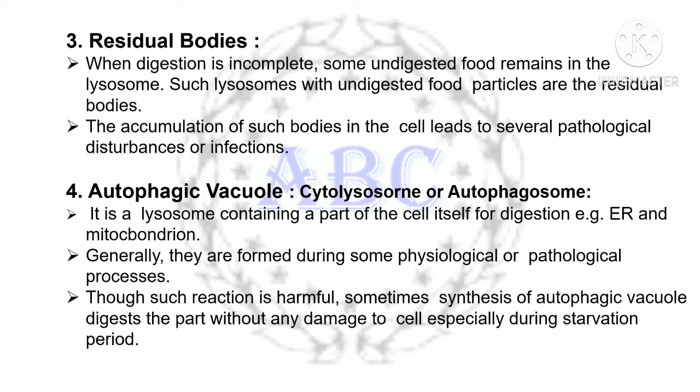The fourth type is the autophagic vacuole, also called cytolysosome or autophagosome. These are also secondary lysosomes. It is a lysosome containing a part of the cell itself for digestion — for example, endoplasmic reticulum and mitochondria. Generally they are formed during physiological or pathological processes. Though such reactions can be harmful, autophagic vacuoles digest cell parts without damage to the cell, especially during starvation.